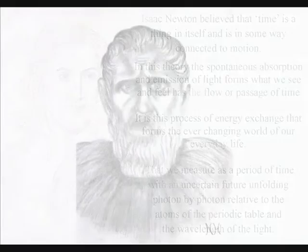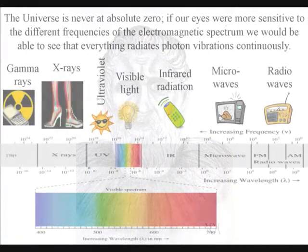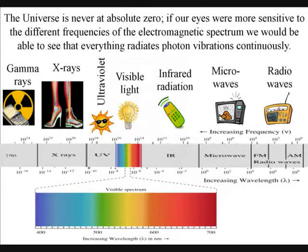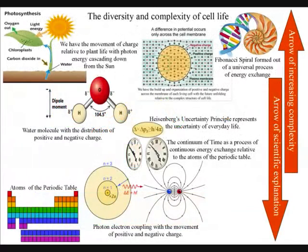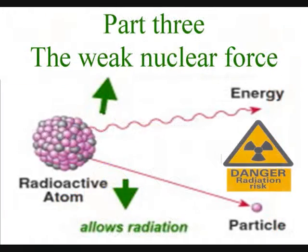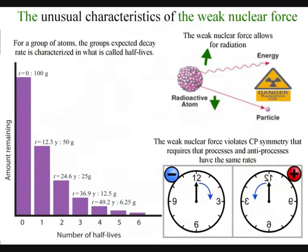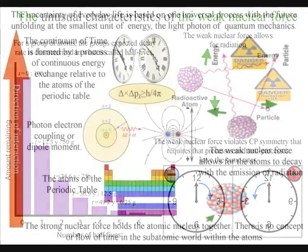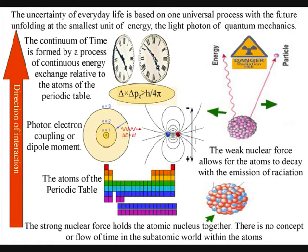In ancient Greece it was believed that the atoms were indestructible, but now we know this is not so. Atoms that decay with an unstable atomic nucleus emitting radiation could represent a problem for a theory that says that the future is unfolding photon by photon relative to the atoms of the periodic table. But the weak nuclear force explains radioactive decay with some very unusual characteristics that can only really be understood as part of a logical process if what we see and feel as the continuum of time is formed by photon-electron interactions.